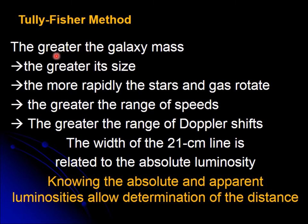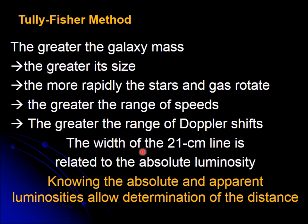The bottom line of all of this is that the greater the galaxy mass — the larger the galaxy — the greater its size. And depending on how big it is, the gas on different parts of the galaxy is going to be moving at different speeds. The greater the size, the larger the range of speeds from one edge to the other. So the more rapidly the stars and gas rotate, the greater the range of speeds, and consequently the greater the range of the Doppler shift. The width of the 21-centimeter line — it's not going to be a line but a blur — is going to be related to the absolute luminosity. So knowing the absolute luminosity and the apparent luminosity allows us to calculate the distance.